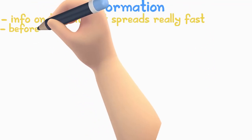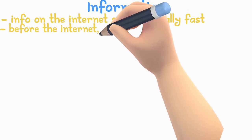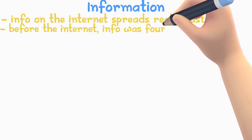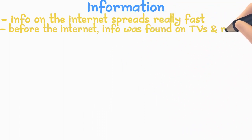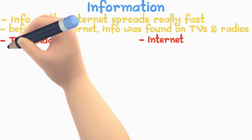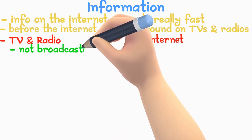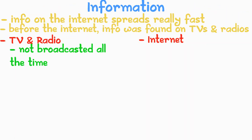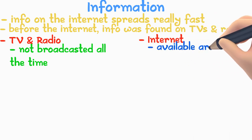Before the internet, the go-to for information was TV and radio. Let's see how they compare with the internet. The TV and radio was not broadcasted all the time, but the internet is available around the clock.